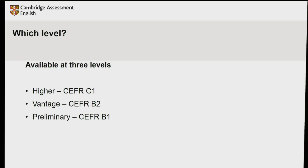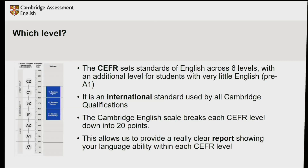There are three levels for the business qualifications: Preliminary, Vantage, and Higher. They all relate to a CEFR level — a set of standards of English across six levels, from A1 elementary all the way up to C2, which is a very advanced level. It's an international standard we use with all our qualifications. Each point — A1, A2, B1, B2 — is split down into 20 points, and when you receive your reporting it will show you exactly where you are within each of those levels.